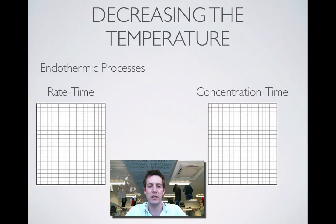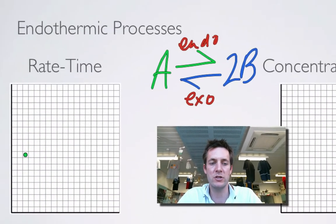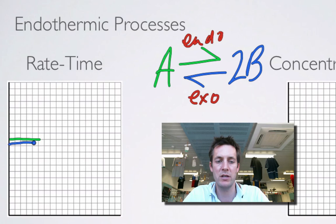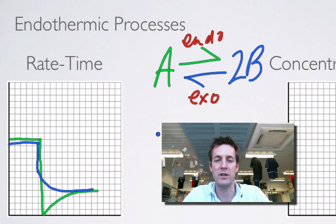We're now decreasing the temperature, and we're back to an endothermic process. Let's make it slightly more complicated — A going to 2B in the forward process, and 2B turning back into A in the backward process. Endothermic forward, exothermic backward. Decrease the temperature, so all reactions slow down. They start off going at the same rate because they're at equilibrium. Which one slows down more? Well, the system is trying to increase the temperature according to Le Chatelier's principle, so the exothermic reaction has to be favoured — it has to end up going faster than the endothermic one. So the endothermic one will slow down more than the exothermic one, and they'll come back to equilibrium in the usual way. The system is favouring the backward process in this case.